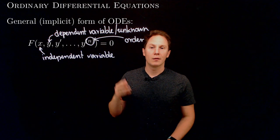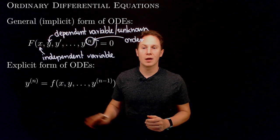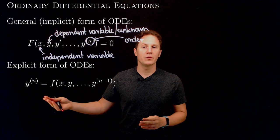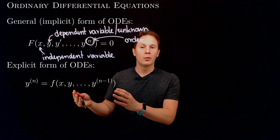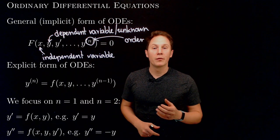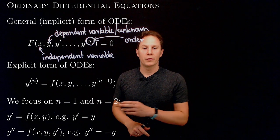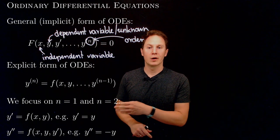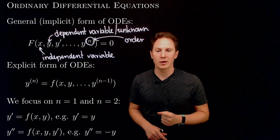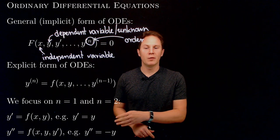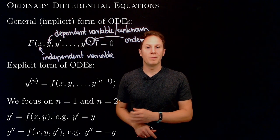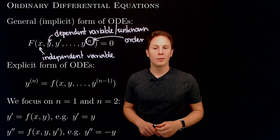If we manage to express the highest order derivative of the unknown function from the equation and put it to one side, then we get the explicit form of the ODE. This tells us that the nth derivative of the unknown function is related to the lower order derivatives of the function and the independent variable. We will focus on n equals 1 or n equals 2. An example of a first order ODE is y prime equals y — a function which has itself for the derivative. An example for second order ODEs would be y double prime equals negative y, looking for a function whose second derivative is negative one times the function.